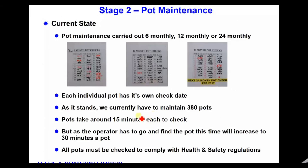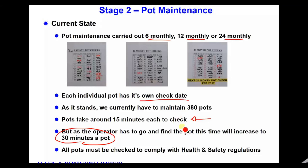Each pot has its own check date with different inspection routines. Pots take around 15 minutes to check, but workers were spending up to 30 minutes searching for them. This is also a health and safety requirement — not just about equipment performance. If one of these pots gets missed and a problem occurs, this is potentially quite a dangerous situation. You never want to compromise on something related to safety. So let's get this thing under control and get it all correct.